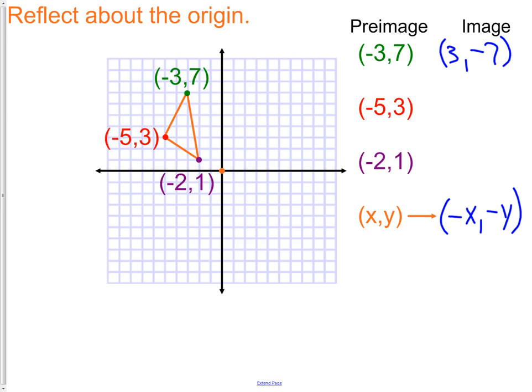Instead of being at (-5, positive 3), we go to (positive 5, -3). Instead of being at (-2, positive 1), we go to (positive 2, -1).